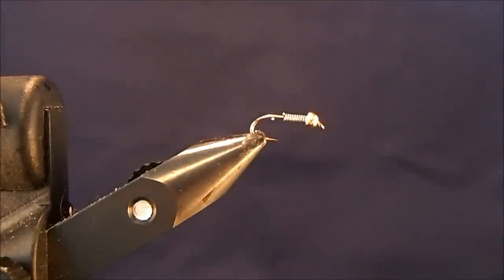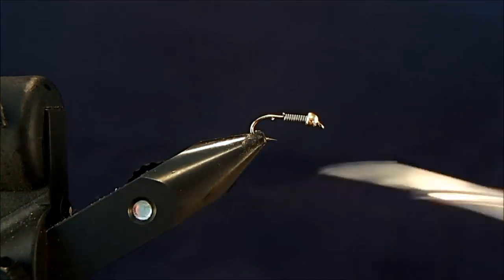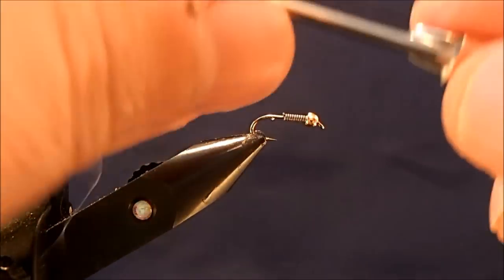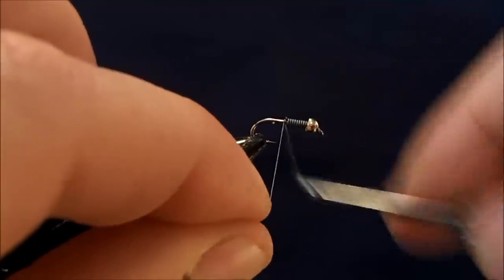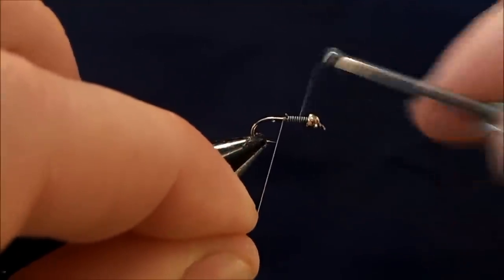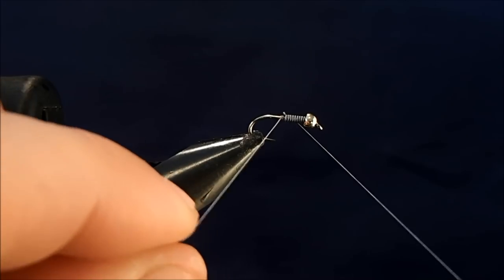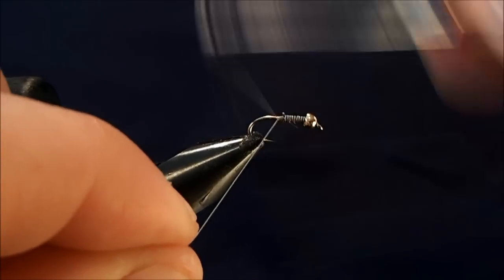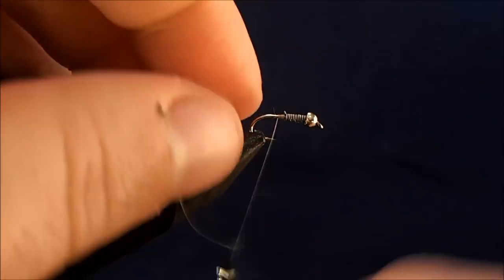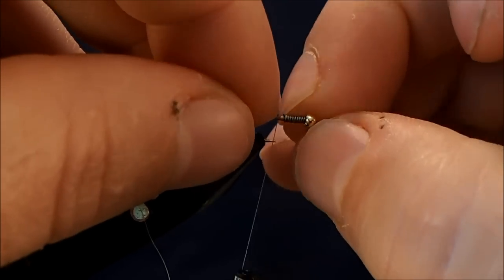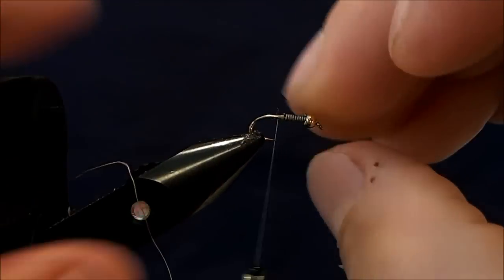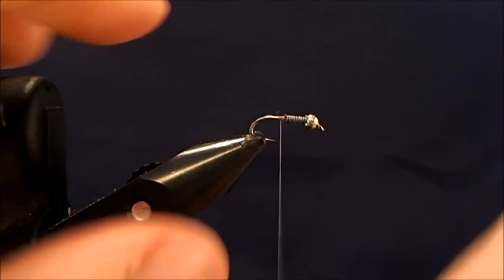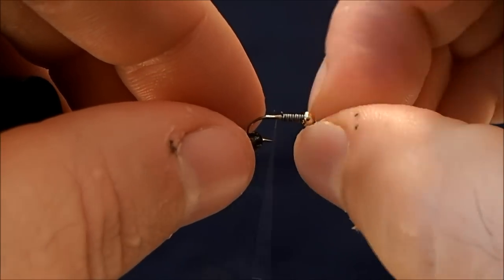For the thread I'll use is an 8 tan. And I use tan because it matches the body or the dubbing of the body of the fly. And so that way as this fly gets worn, if any of the thread does start to show through, and hopefully it's because you're catching fish with it, then it'll be the same color as the body.